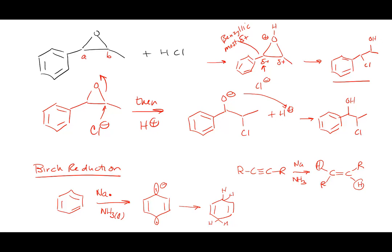You might ask: why would you ever want to destroy a benzene ring? Well, sometimes you want to take the benzene ring and convert it into a cyclohexane you can do something with. There are limited reactions for benzene, but if I make it a non-conjugated alkene, I can add Br₂ and do all those reactions.